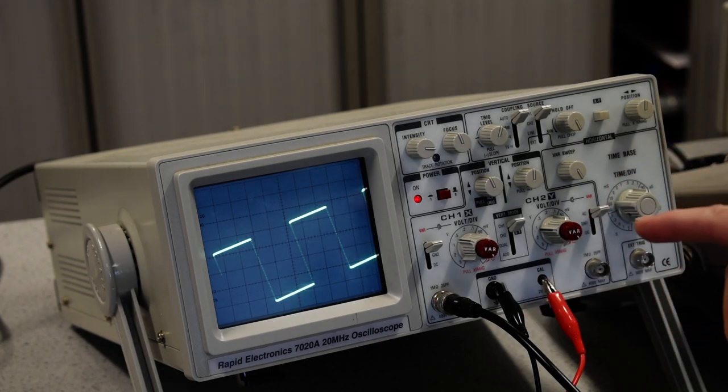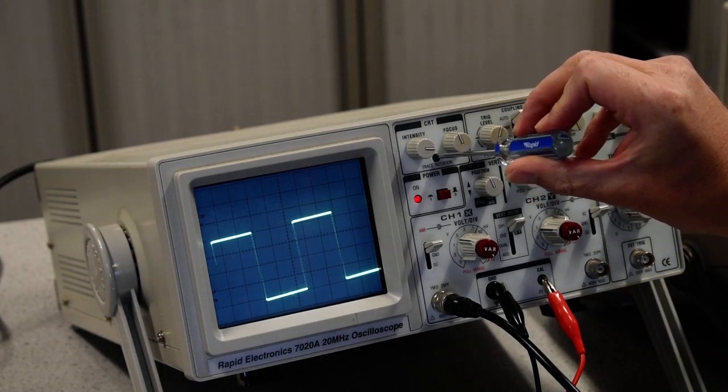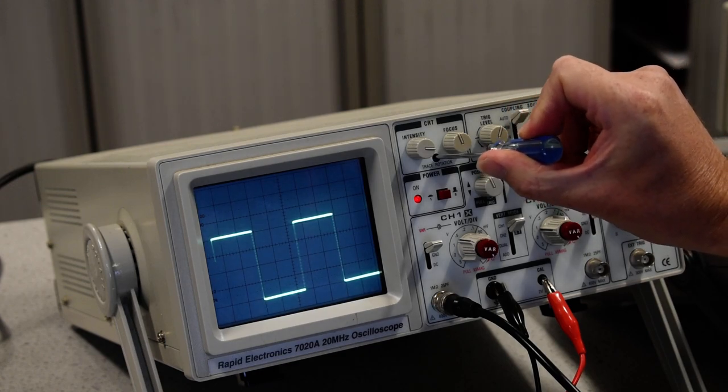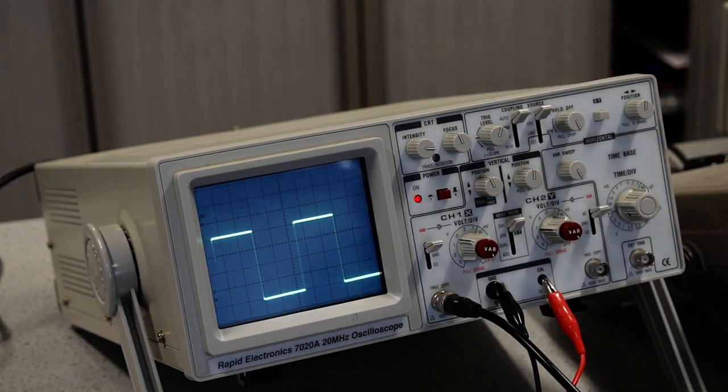At the moment the trace is offset, so what we can do is manipulate the trace rotation. There's a flat blade screwdriver and good eyesight, and get the horizontal sweeps so that it makes it much easier to measure accurately.